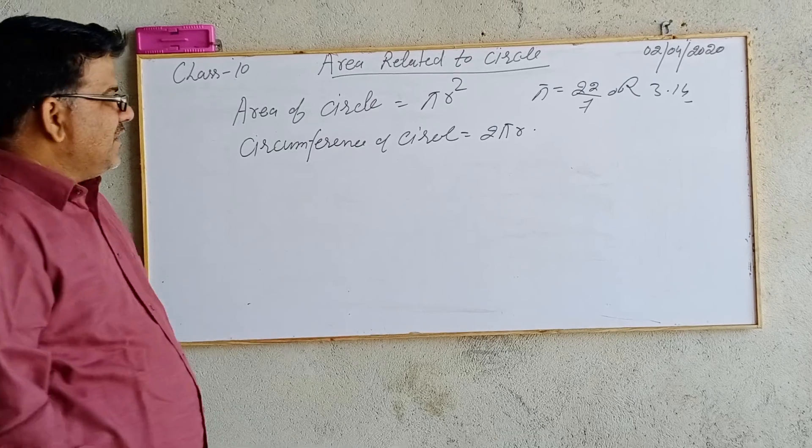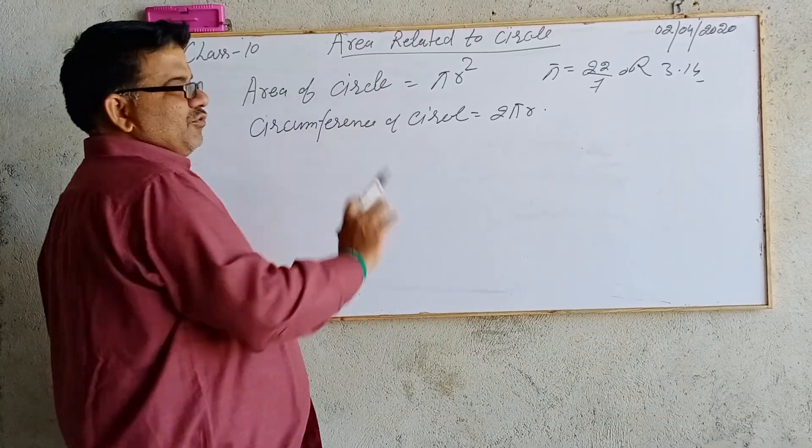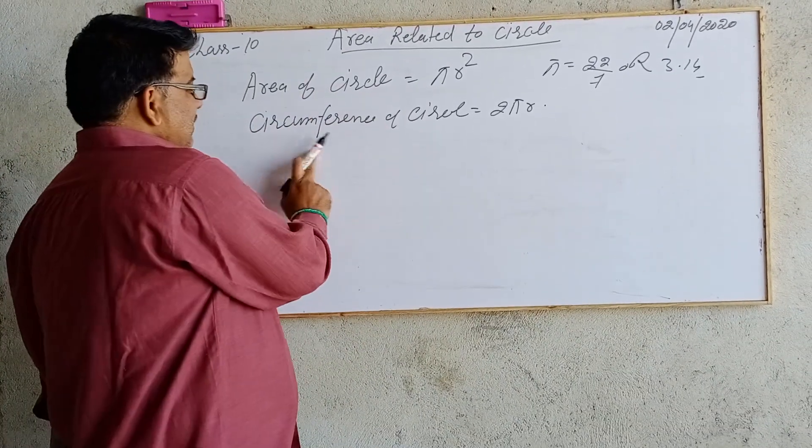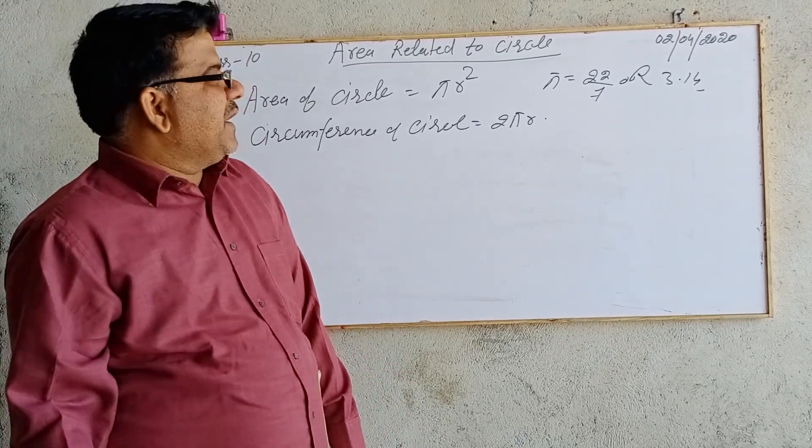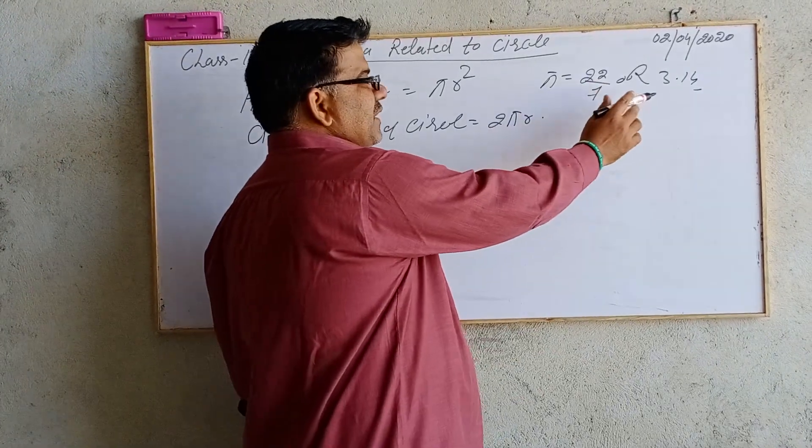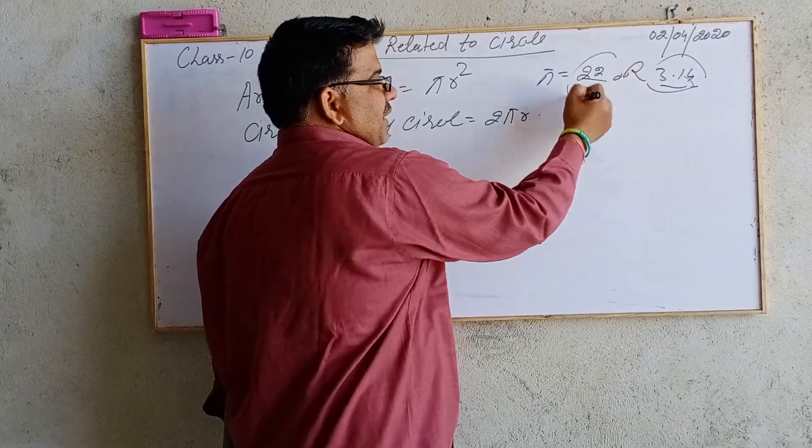Everybody knows that area of circle is πr², and circumference of circle is 2πr. For π we can take 22/7 or 3.14.